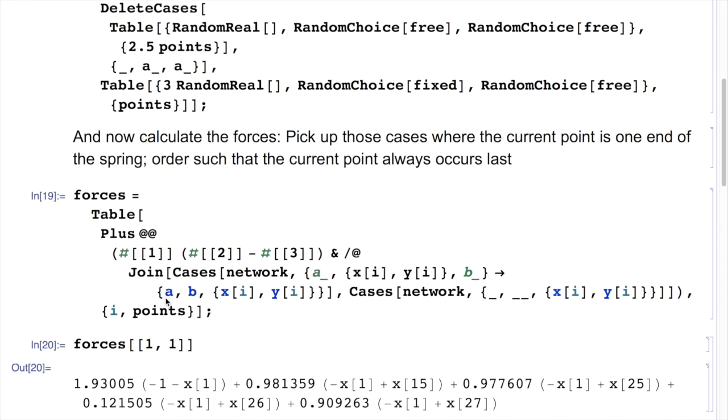So I need to select from my network all of those cases, which is why the word cases comes in here, where either my point x_i, y_i is the beginning of the spring, or the other way around is the end of the spring. Since it makes no difference whether it's the beginning or the end, actually I make my life easy by swapping things around, by replacing, essentially putting the final point second and the point I'm connecting to last, so I know that my last point is always my point x_i.